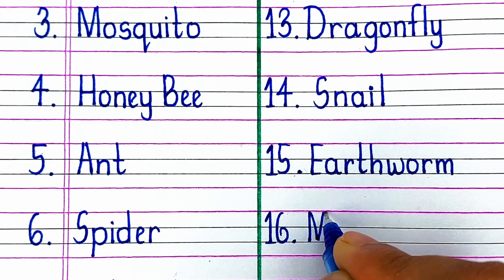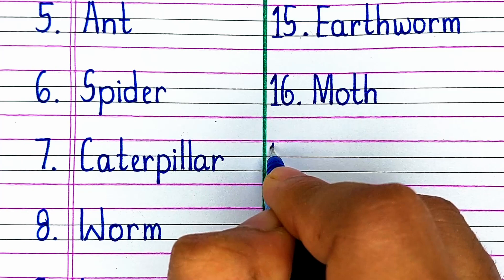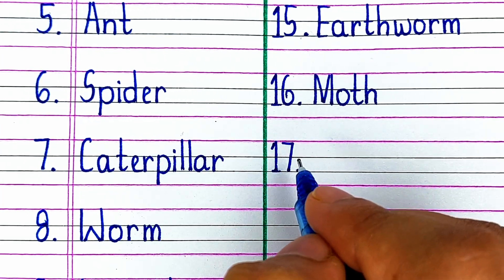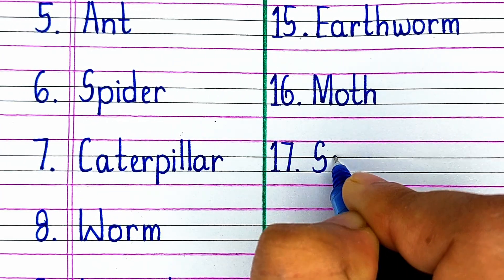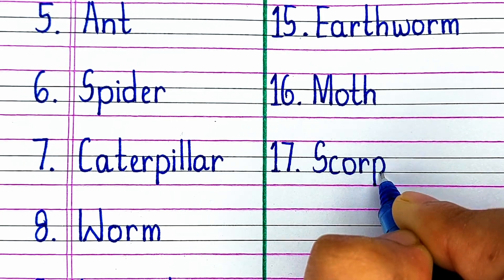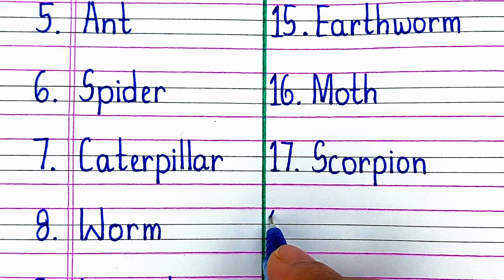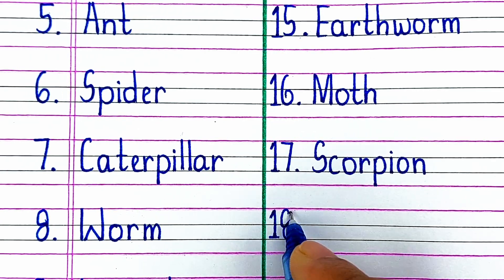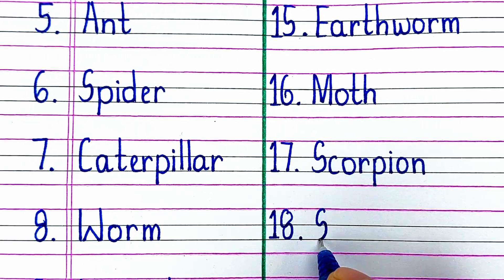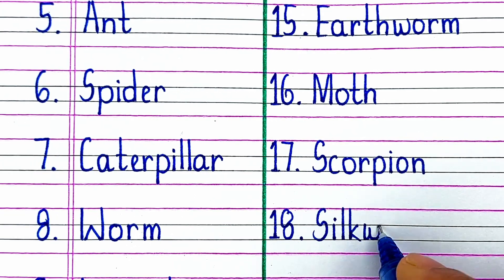Next is M-O-T-H, Moth. On number 17 we have S-C-O-R-P-I-O-N, Scorpion. Next is S-I-L-K-W-O-R-M, Silkworm.